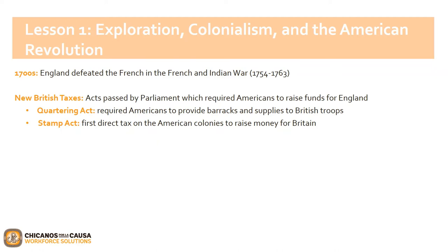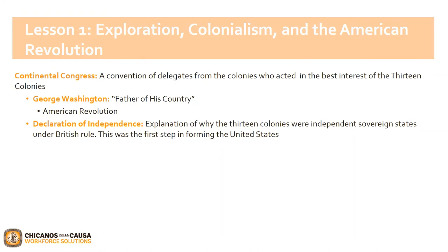For example, the Quartering Act, which required Americans to provide barracks and supplies to British troops, and the Stamp Act, which was the first direct tax on the American colonies to raise money for Britain. As you can imagine, Americans were not happy with the new taxes and policies imposed on them. Another inevitable war was on the horizon.